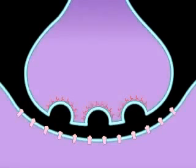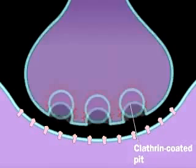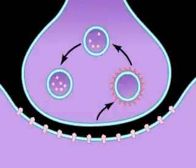The empty vesicles are recycled via endocytosis of clathrin-coated pits and take up more neurotransmitter to start the cycle again.